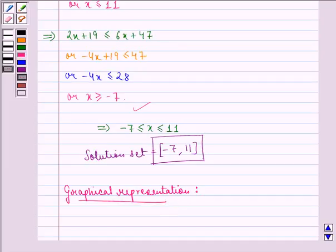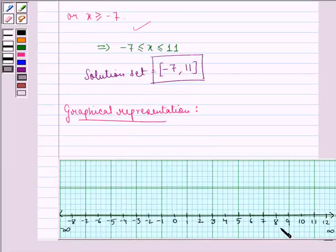We see that this is the number line and the required solution set is -7 to 11 where -7 and 11 are included. So, this is our solution set.